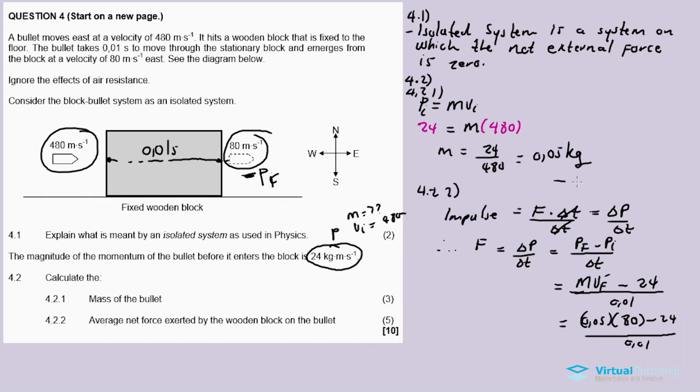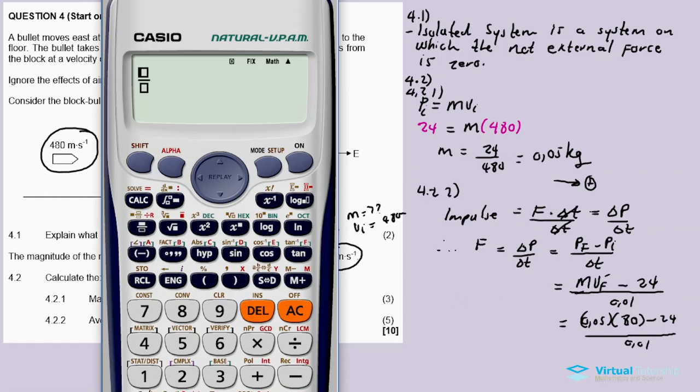I choose the east direction as positive. So 80 is positive, and this 24 is also positive since the direction of the bullet is to the east. After it goes through the block it's still to the east, so it's still positive. So there's no need to worry about matching directions.